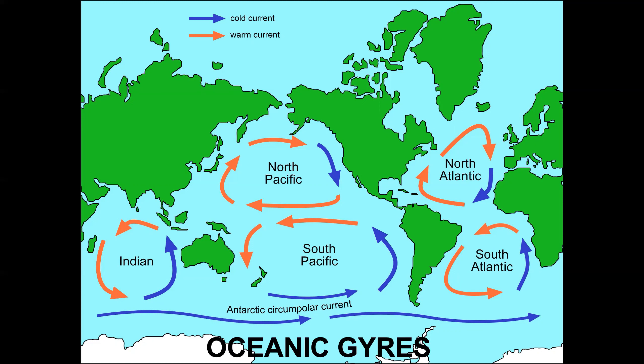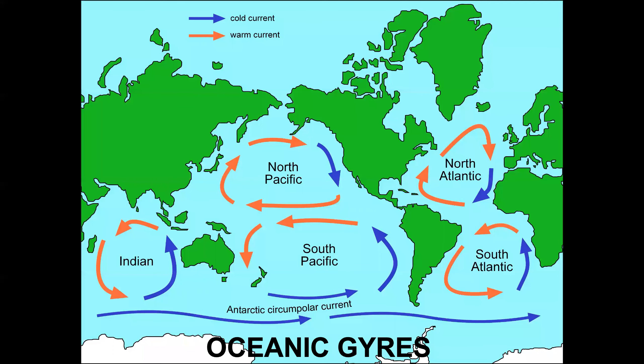These are called oceanic gyres — think of them like big rotors on the surface of each of the oceans. Now there's also a deep ocean circulation, and it's called the thermohaline circulation. You need to know what this is.